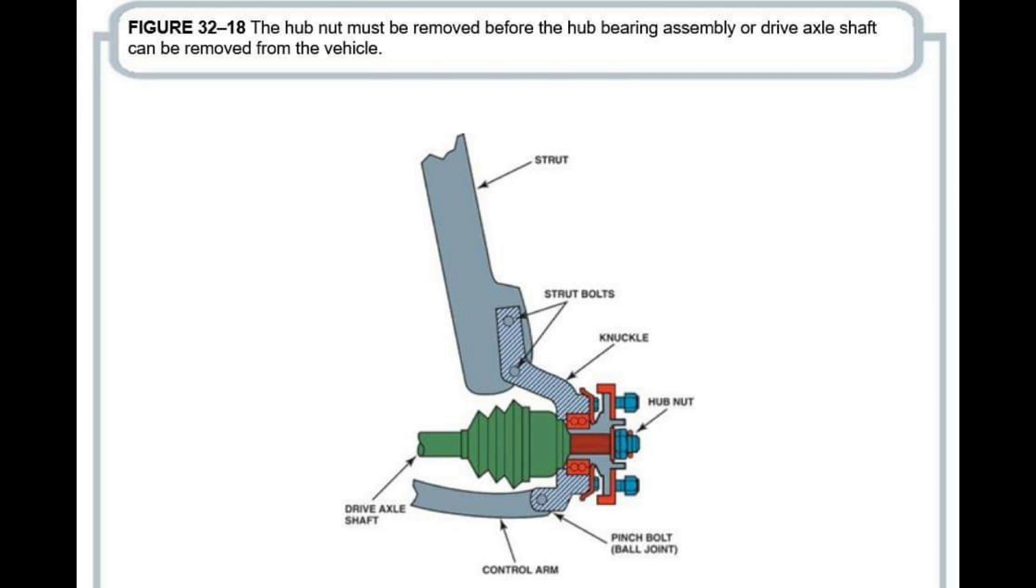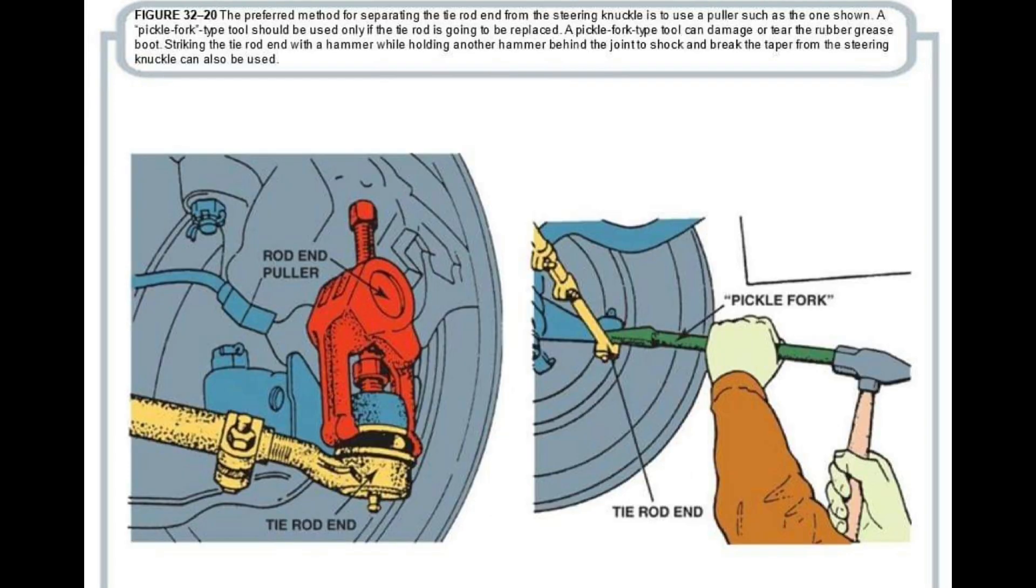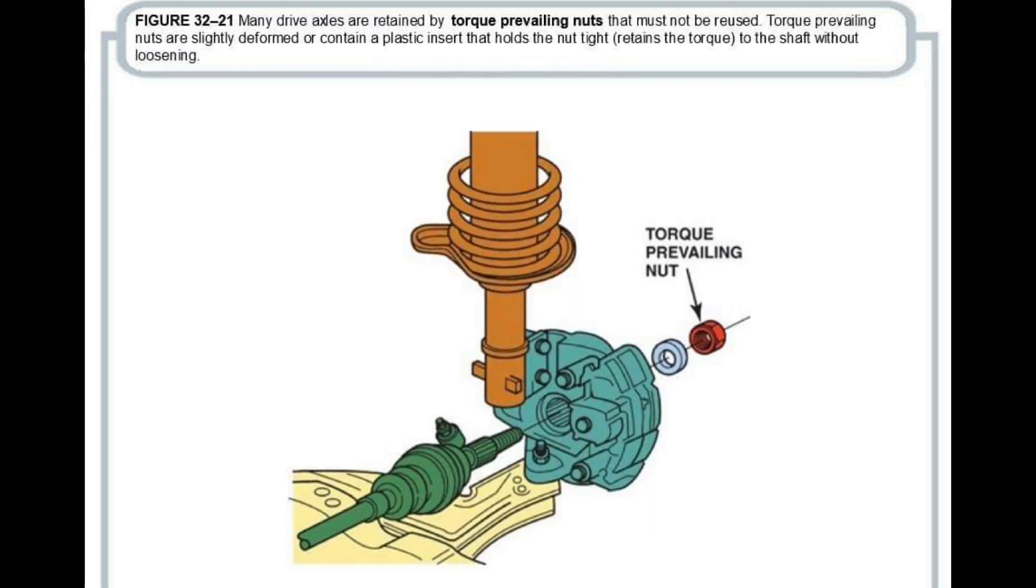Bearing: A bearing is a mechanical component that reduces friction between moving parts and supports rotational and linear motion. In automotive applications, bearings are commonly used in the wheels, allowing them to rotate smoothly while supporting the weight of the vehicle.